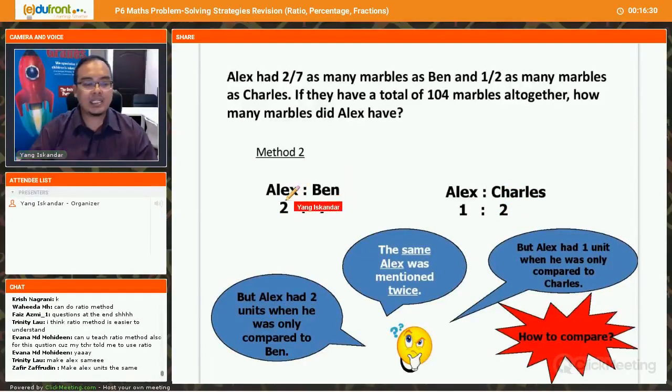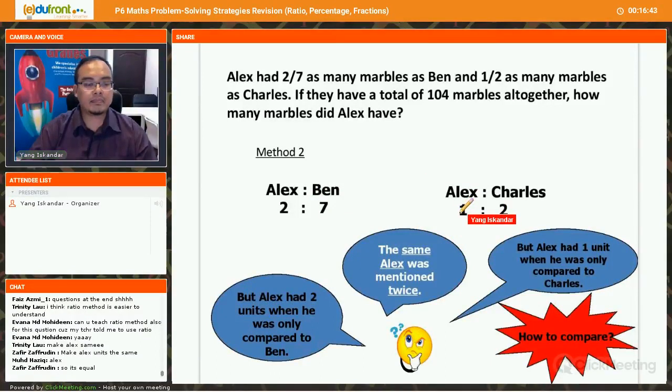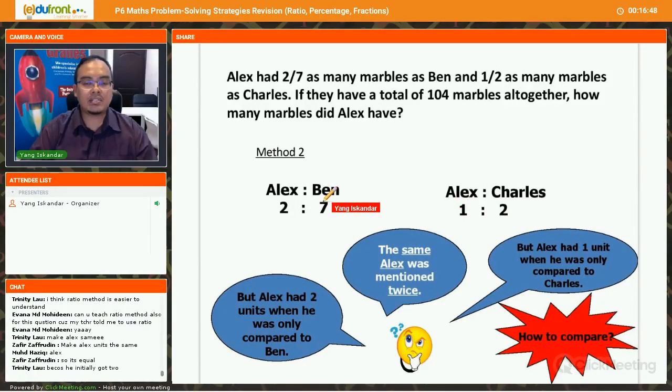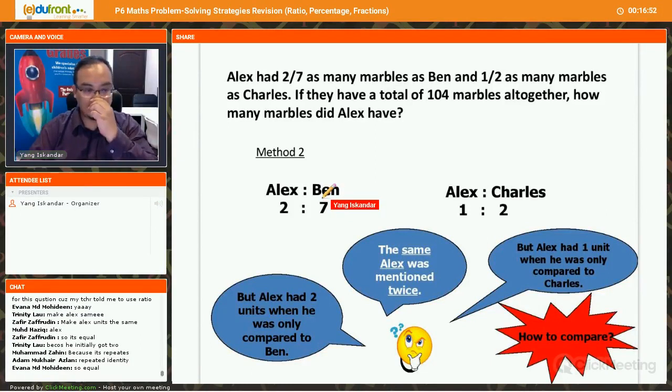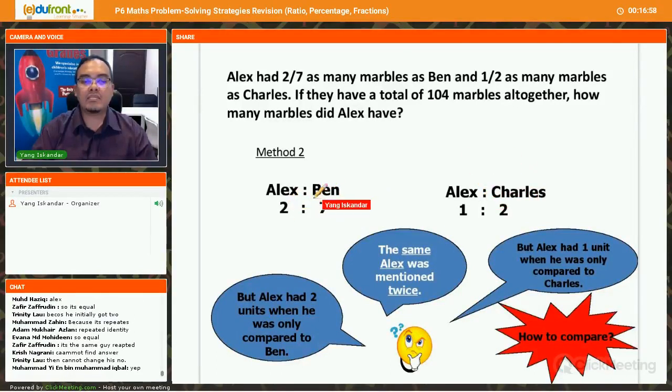So who is repeated here? Alex, right? Since Alex is repeated, we make the ratio the same. Why do we have to make the same? Okay? Let's ask Trinity. Now Trinity, why do I have to make Alex the same? Why not Ben or Charles? Yes, because we make it the same so that we can make a comparison between or with these two ratios.